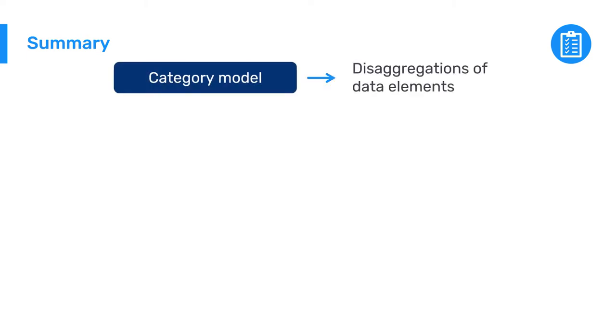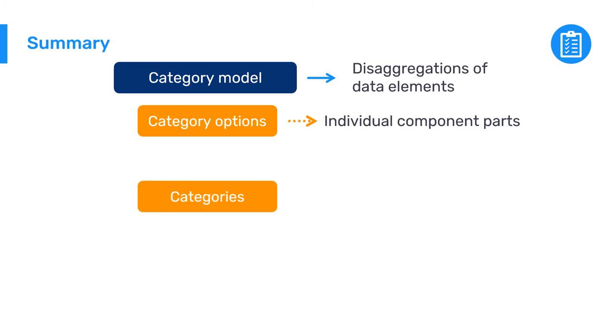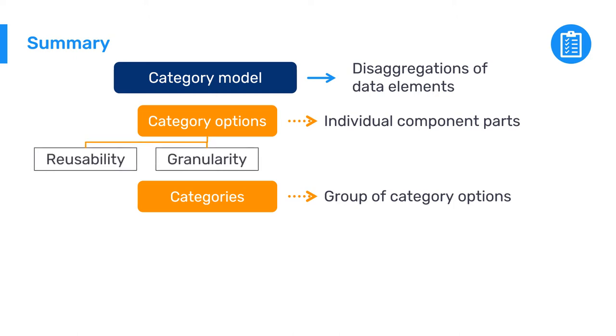In summary, the category model refers to the disaggregation of data elements into different classifications such as age and sex. The individual component parts are referred to as category options. These are all the individual options that make up a category, which is a group of category options. From a design perspective, it is important that category options follow the principles of reusability and granularity. From an analysis perspective, it is key that category options within a category encompass the totality of a data element without gaps or overlap, so that no values are omitted or counted more than once.